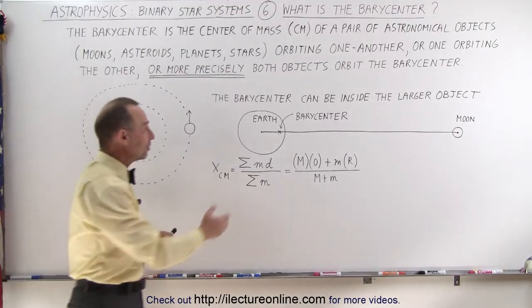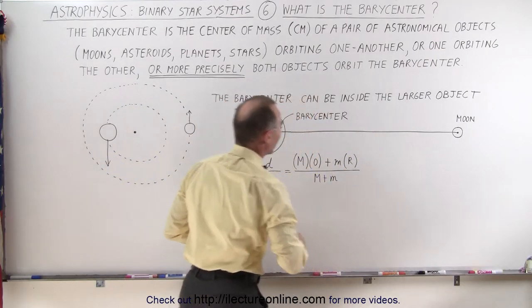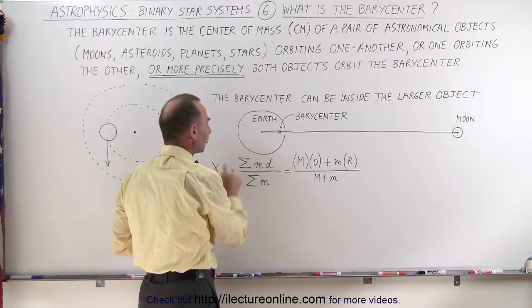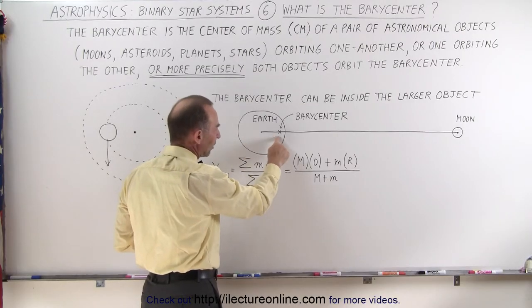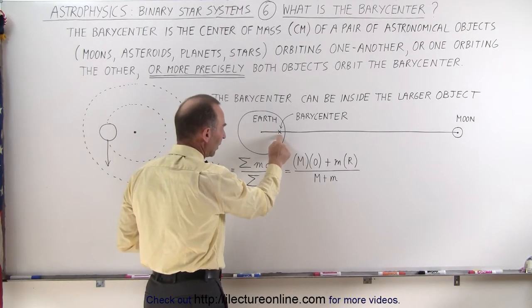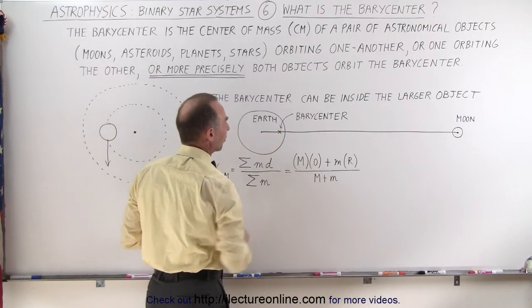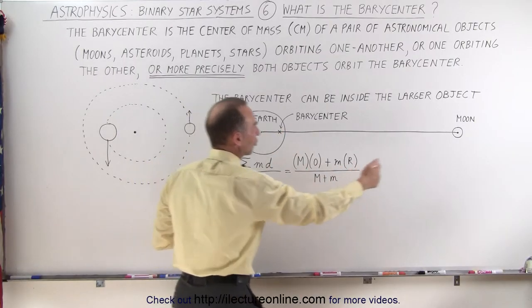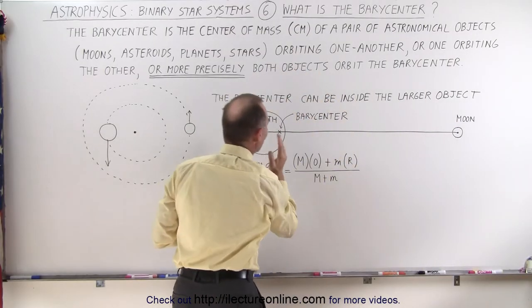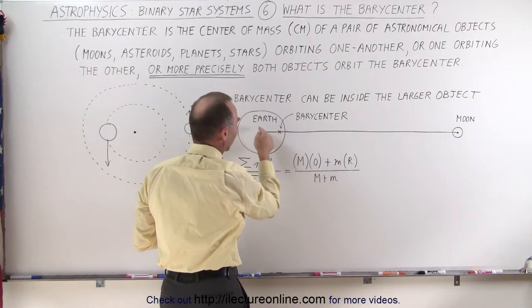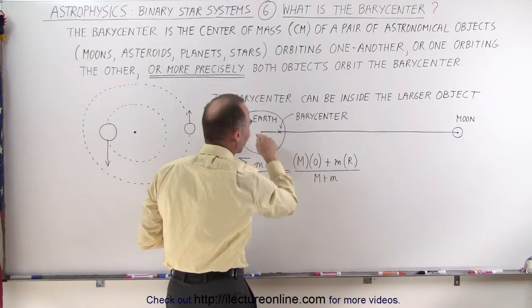As an example, here we have the Earth-Moon system. Let's calculate the center of mass of the Earth-Moon system, which is just inside the Earth, but far away from the center of the Earth. As the Moon goes around the Earth, it really goes around the barycenter, and at the same time, the Earth goes around the barycenter as well.